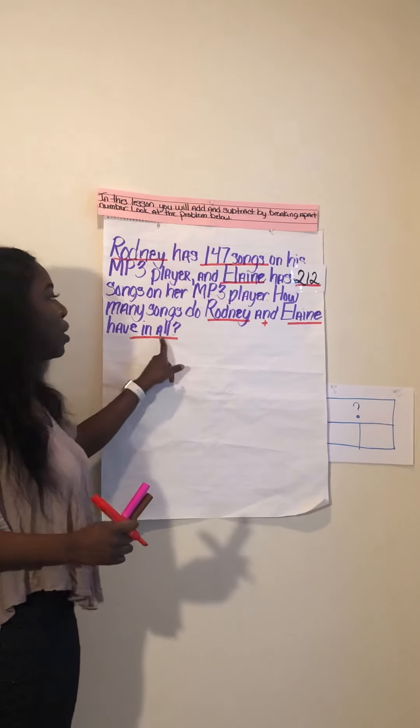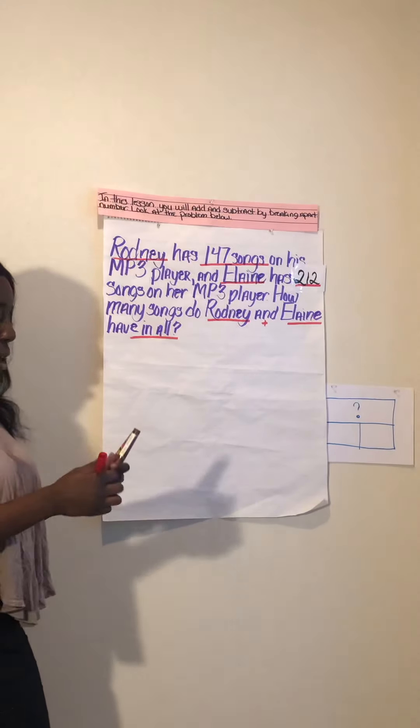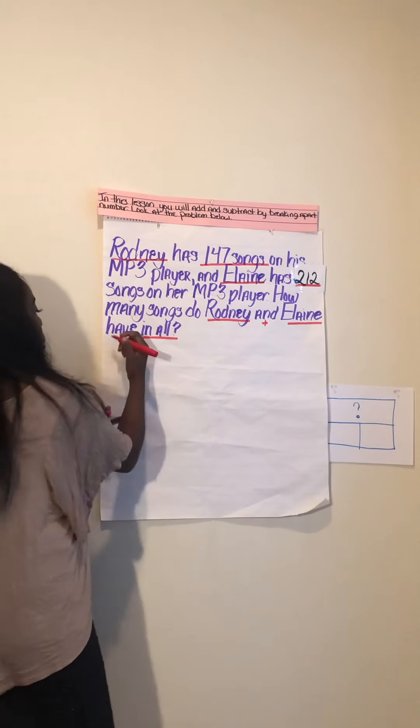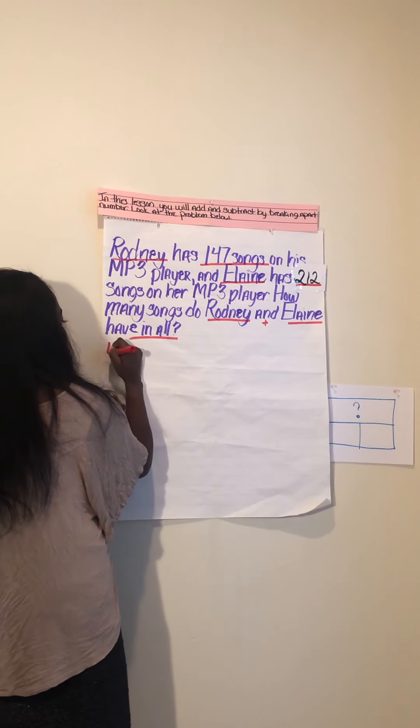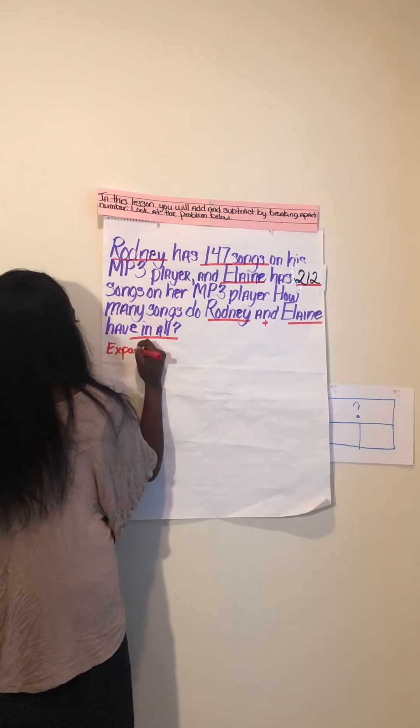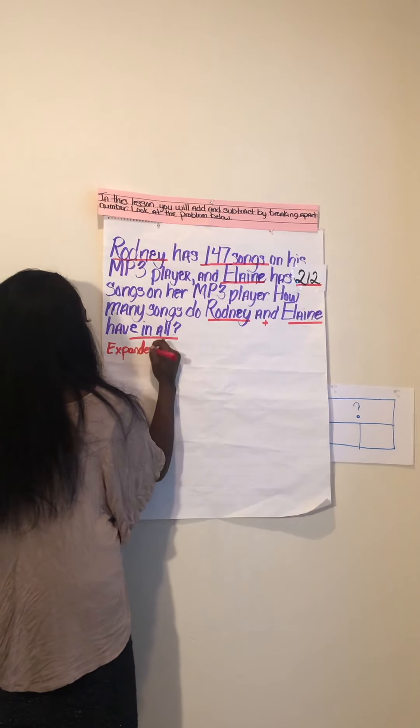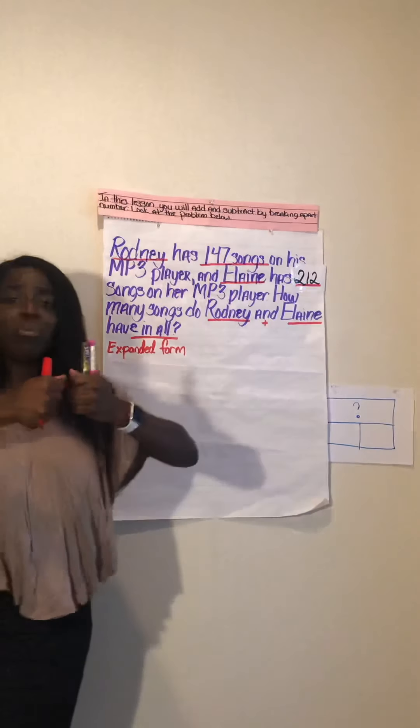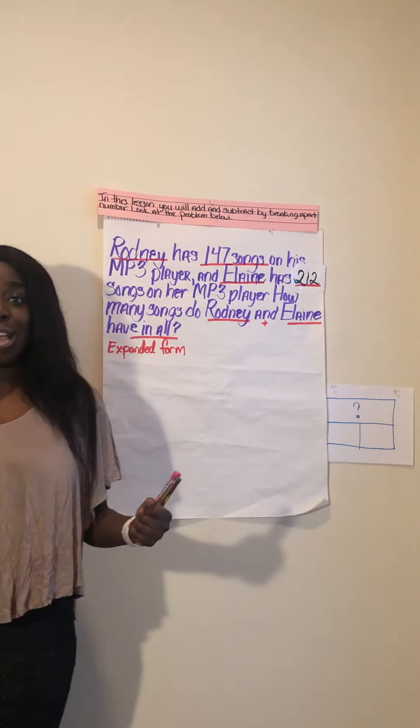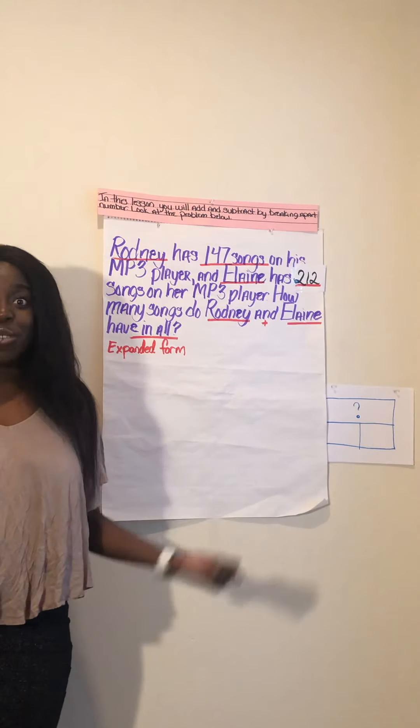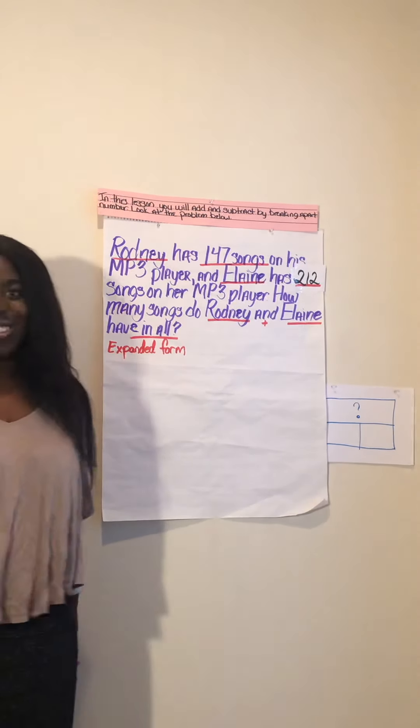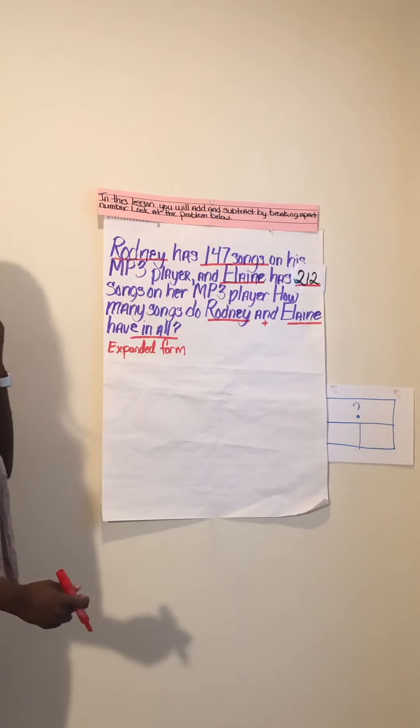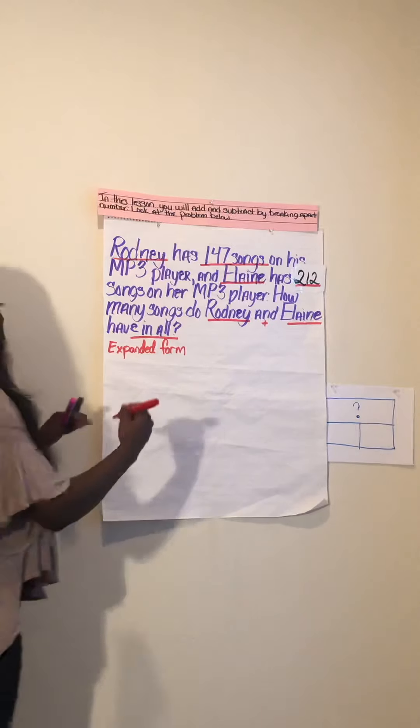Again, we are going to be working with breaking apart our number. One way to break apart your number is in expanded form. Expanded form is when we stretch the number apart so that we are able to see the different units inside of the number. Let's go ahead and start with Rodney's number.